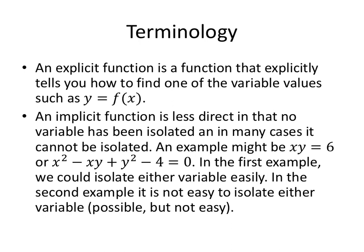An implicit function is less direct in that no variable has been isolated, and in many cases it can't be isolated. A nice simple example might be xy equals 6. We can isolate y if we wanted to, but in x squared minus xy plus y squared minus 4 equals 0, we could isolate y and end up with two equations. It's possible, it's not very easy, and nobody really wants to do that very often.